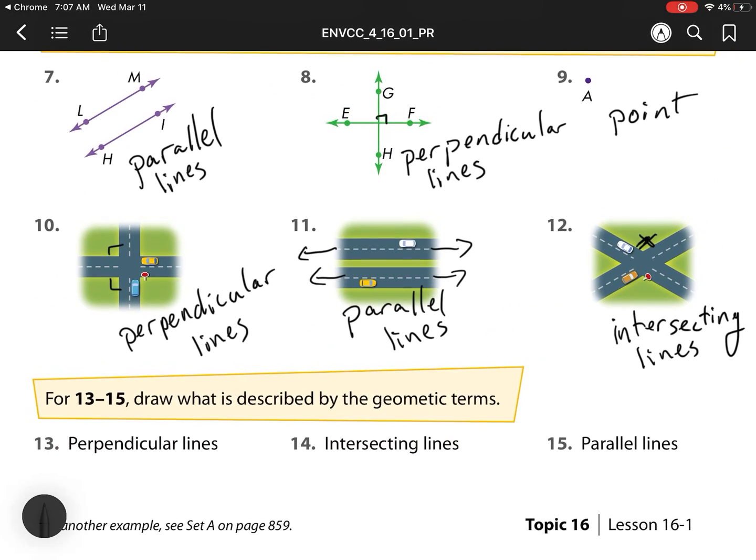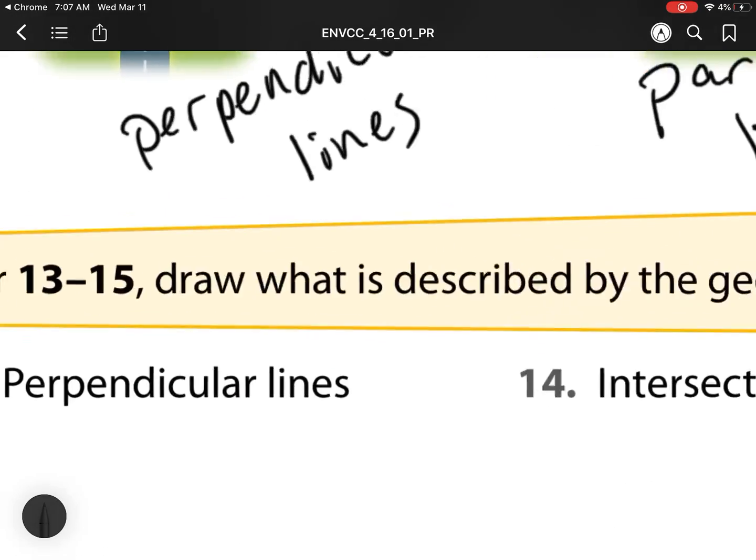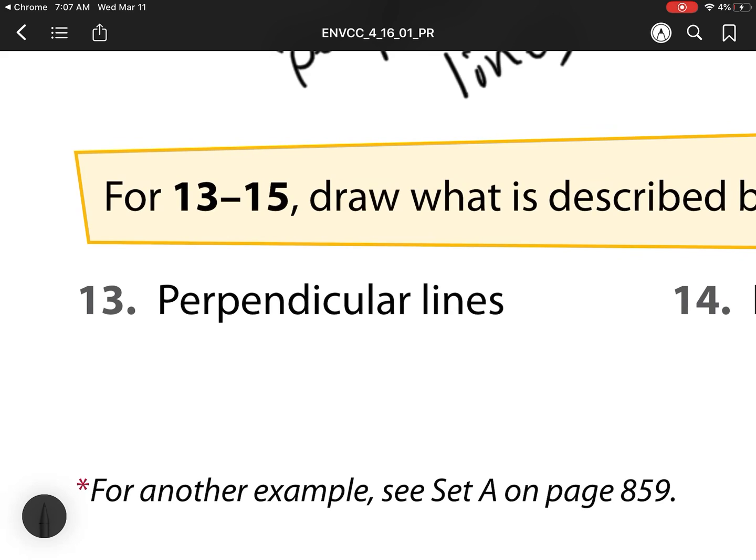Number 13, 14, 15, instead of them giving us the picture, and we write the words, they're doing the opposite. So we need perpendicular. So here I'm going to draw two lines. I need those arrows on the end, so I know they go on forever. And they're perpendicular, so they form that right square.